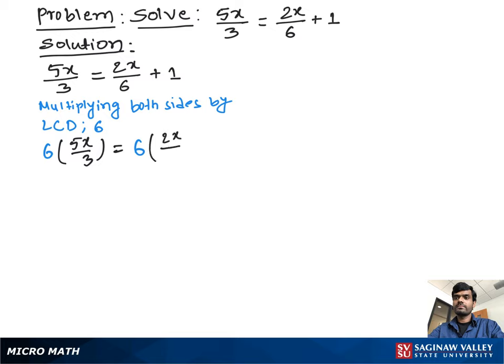Now 6 divided by 3 which is 2. Then you can write 2 times 5x equal to, and using distributing property we can write 6 times 2x over 6 plus 6 times 1.